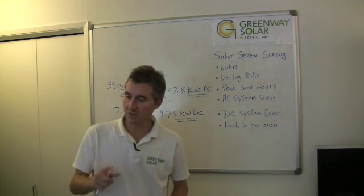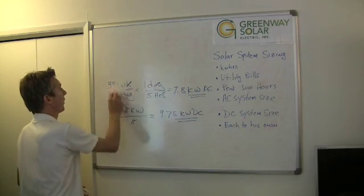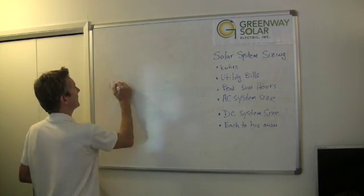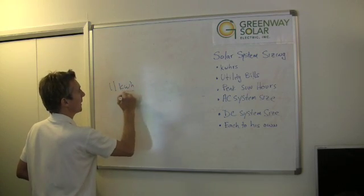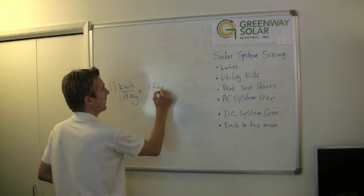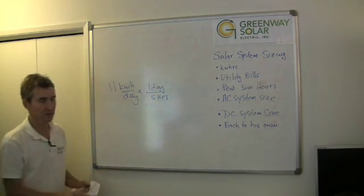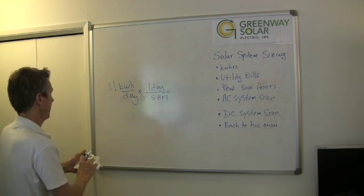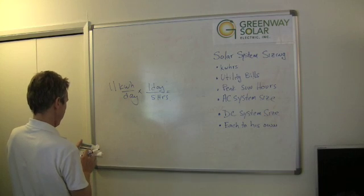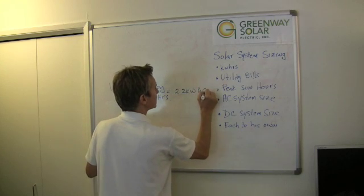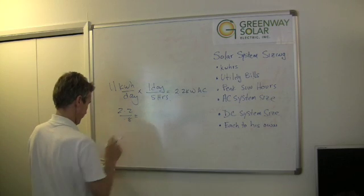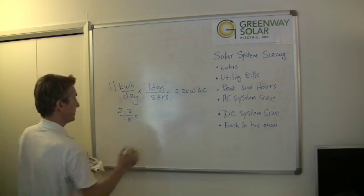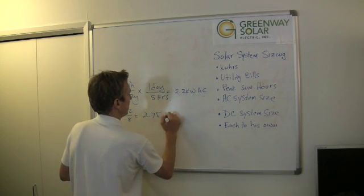Now let me just do, just so you guys really get this concept, let me do one more. So let's look at the other customer who used 11 kilowatt hours per day. One day divided by five hours approximately. It's going to vary a little bit by zip code, but this is close enough for rock and roll. So 11 divided by five is 2.2 kilowatt AC system. We're now going to divide that by 0.8, 2.2 divided by 0.8, 2.75 kilowatt DC system.